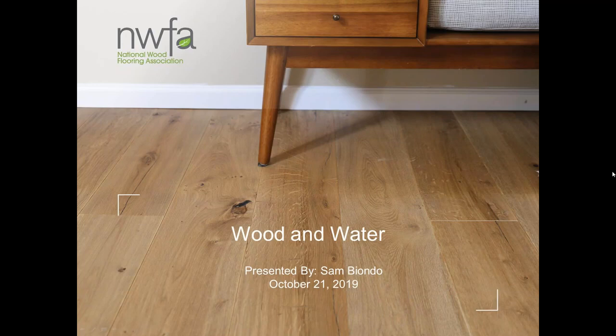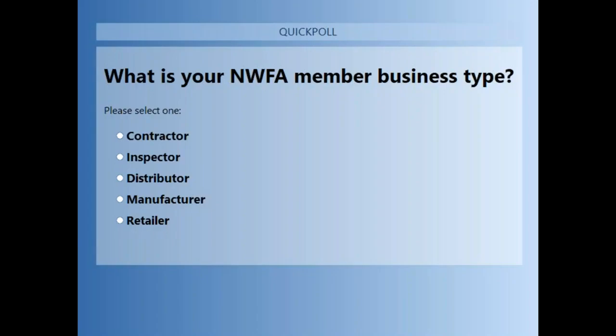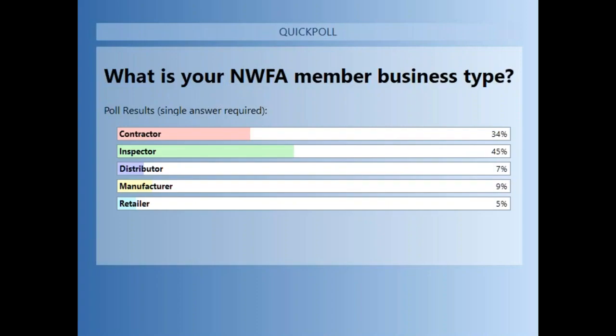Before we begin the presentation, we have a poll question: what is your NWFA member business type? The options are contractor, inspector, distributor, manufacturer, or retailer. Please select the appropriate response and click submit. The results show 45% of you are inspectors, followed by 34% contractors, 9% manufacturers, 7% distributors, and 5% retailers.